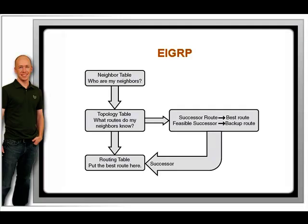EIGRP uses the bandwidth and delay of an interface by default, with the option of factoring in reliability, load, and MTU.